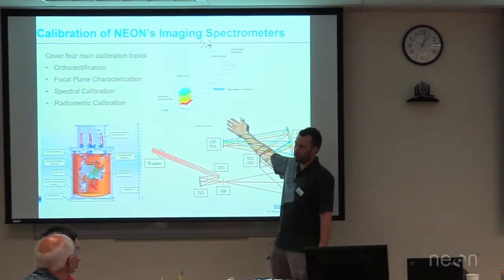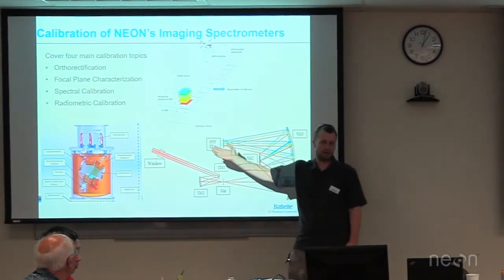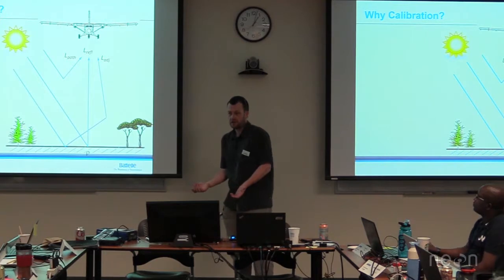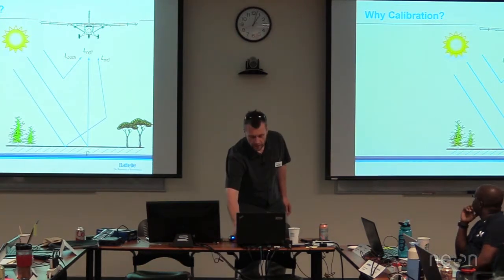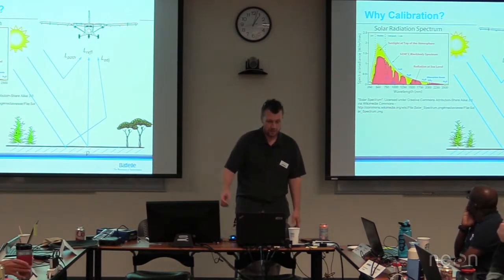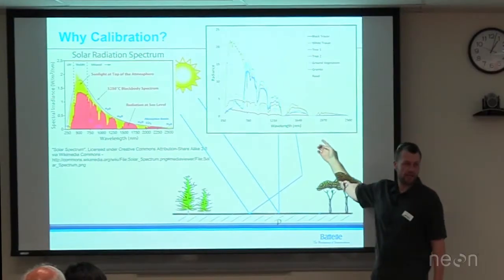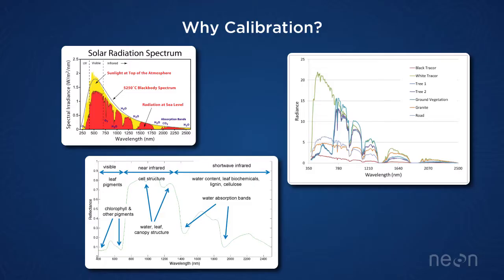For orthorectification we're trying to get the pixels down on the ground onto the lidar data, whether it's a DSM or, if we don't have NEON lidar data, a DSM pulled from other sources, and use that as a surface to place these pixels on. As for why calibration: we need it to get to our higher-level data products. We have a good understanding of what the sun puts out, and calibration lets us figure out how much light got to the sensor so we can get to reflectance data of different objects on the ground.